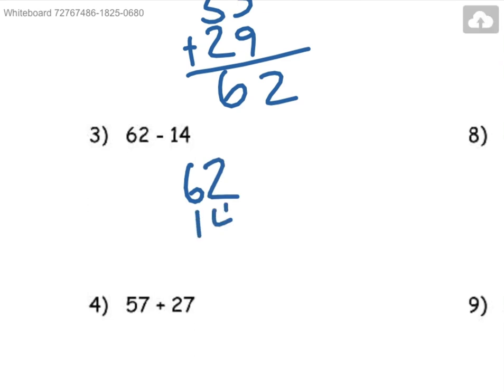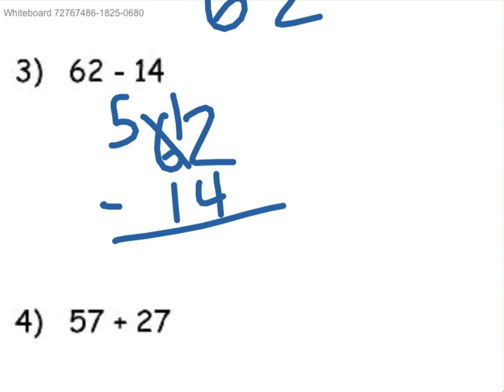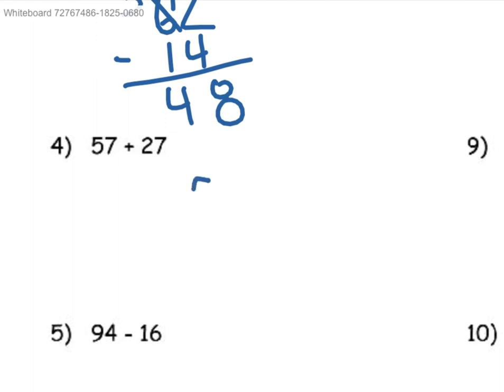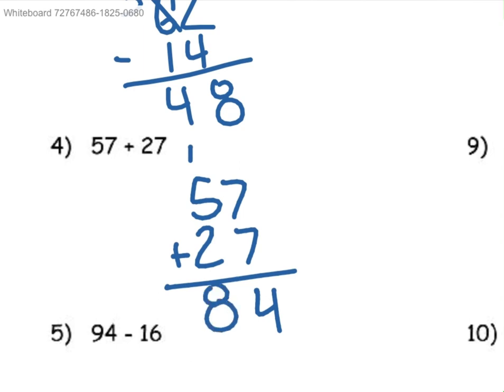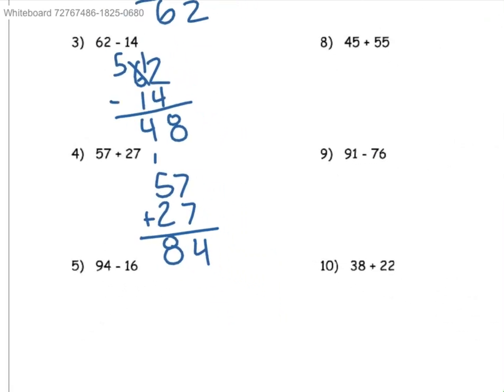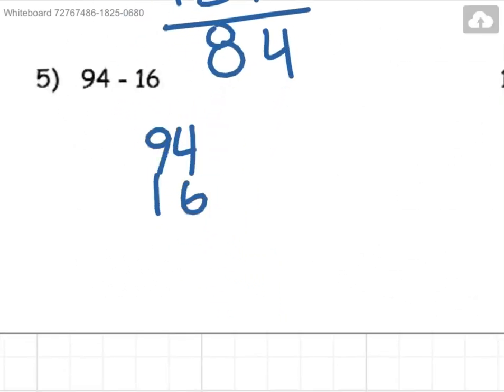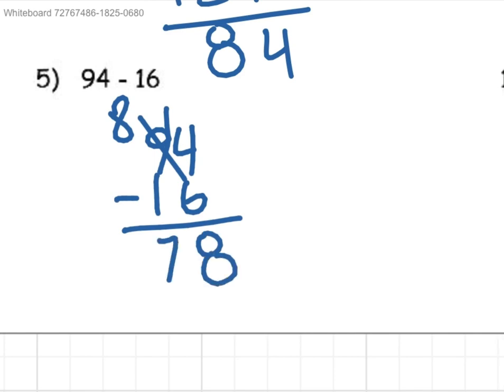62 minus 14. So turn this into a 5, put the 1 over here. 12 minus 4, that is an 8. And then 5 minus 1 is 4. 57 plus 27. So 7 plus 7 is 14. 5 plus 1 is 6, plus 2 is 8. So we have 84 as our answer. And then 94 minus 16. Put the 1 over, 14 minus 6 is equal to 8. And then 8 minus 1 is equal to 7. So our answer is 78.